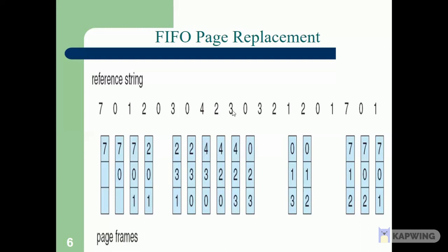For reference 3: 3 is not in the frame, page fault occurs. We replace 0 with 3 — count is 9. For reference 0: 0 is not in the frame, page fault occurs. The first-in entry now is 4, so we replace 4 with 0 — count is 10. For the next reference 3: 3 is available, no page fault. For reference 2: 2 is available, no page fault.